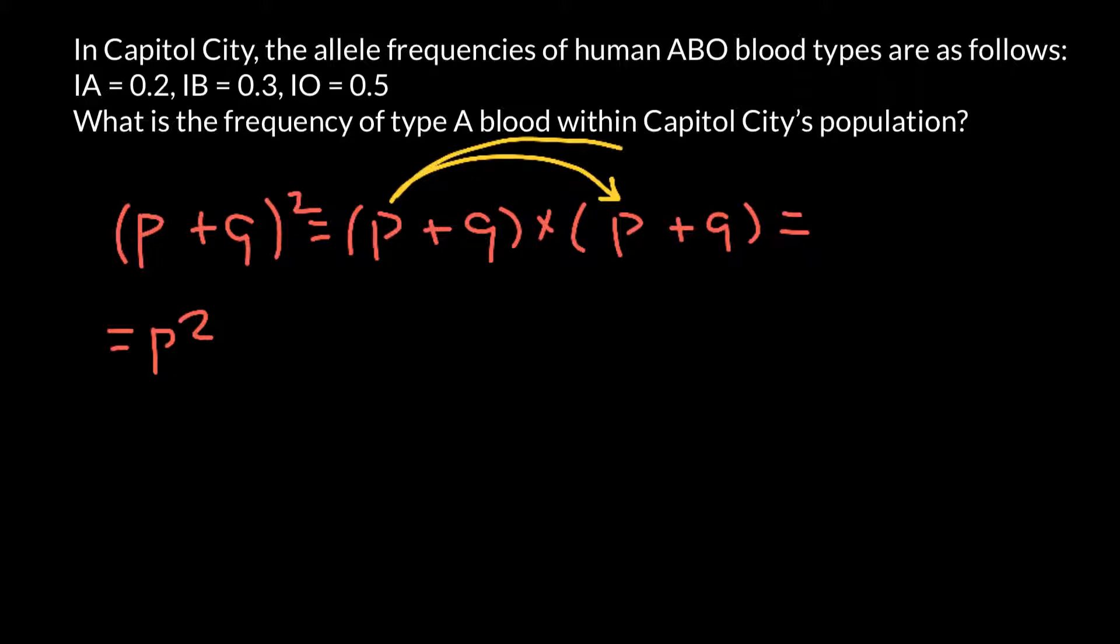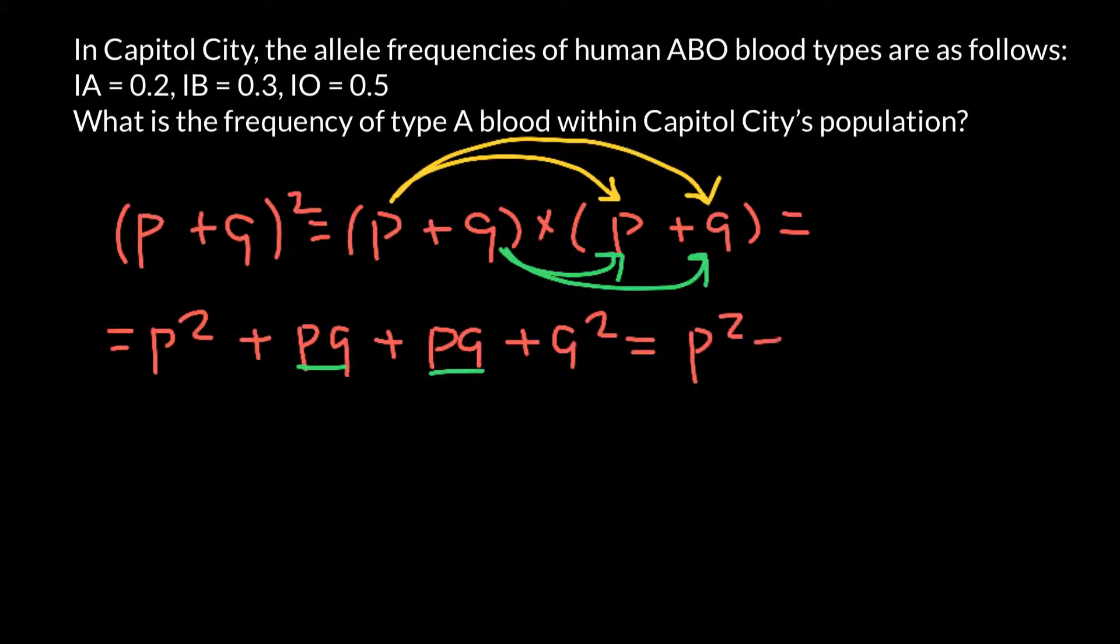Then we multiply this P and this Q, so plus PQ. Then we multiply this Q and this P, and we get PQ. Then we multiply this Q and this Q, and we get Q squared. As you see, we have the same numbers here, so we can group them. In another step, we get P squared plus 2PQ plus Q squared, and all this equals 1. This is the Hardy-Weinberg formula.